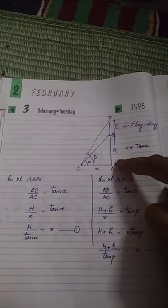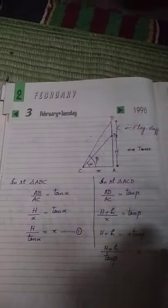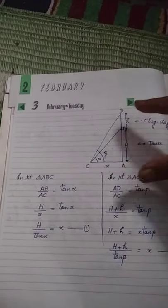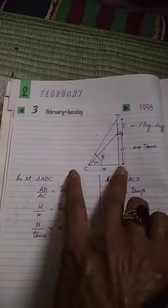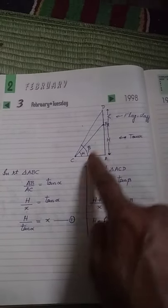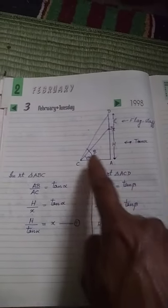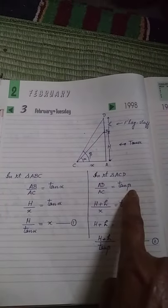After that, I am taking right triangle ACD, that bigger triangle. In that one, we will take AD by AC. So here also, perpendicular upon base will be equal to tan, and in this case beta angle will be taken, tan beta.